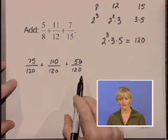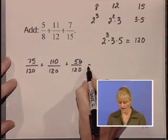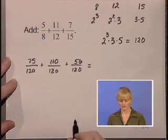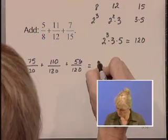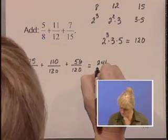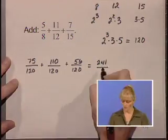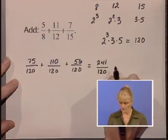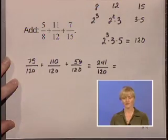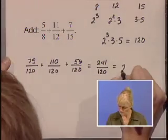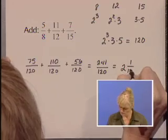We now have all three denominators matching. We are ready to add the numerator straight across. If we do this addition, we have 241 over 120. We could write that as a mixed numeral of 2 and 1 over 120.